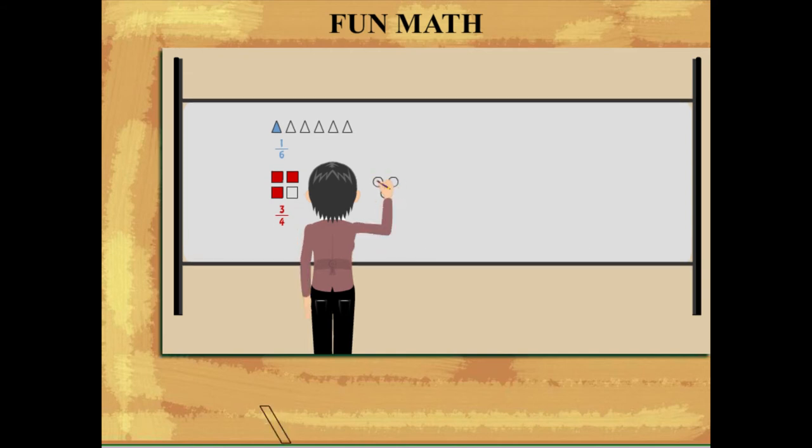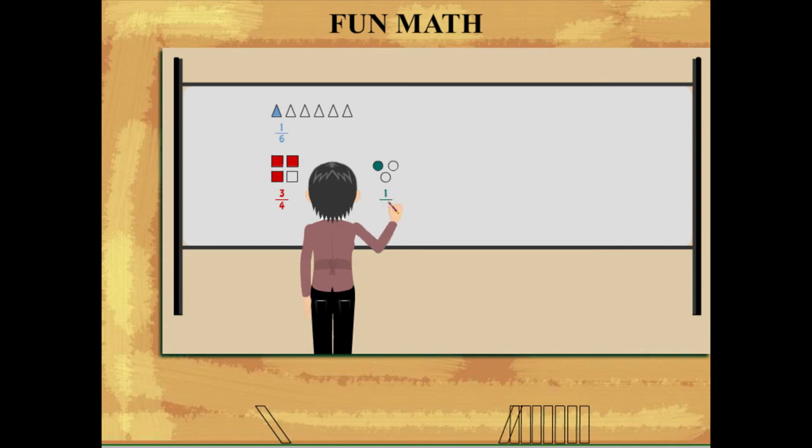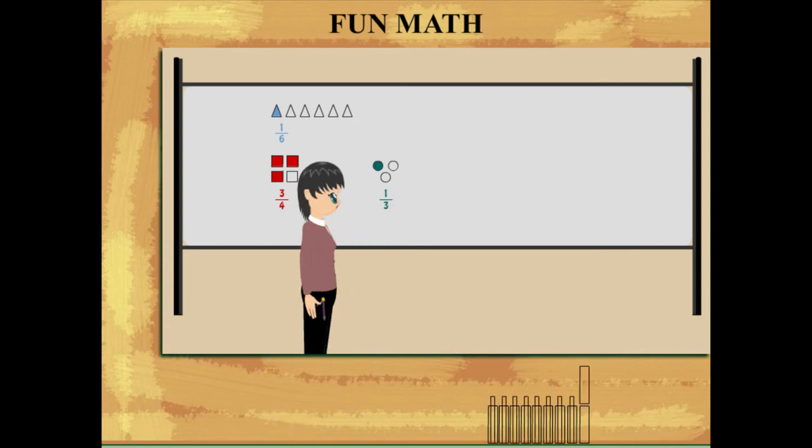Next, Teacher Nancy makes three circles and colors one of them. She writes the fraction as one out of three, or one upon three.